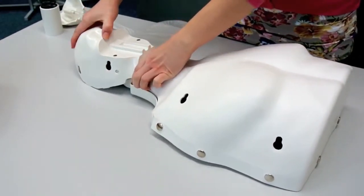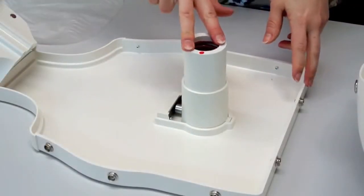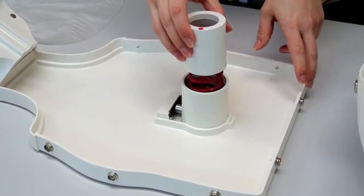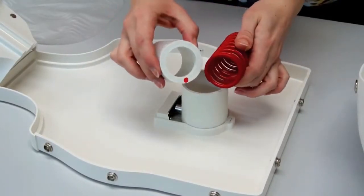Tilting the head back will make it easier to remove the thorax cover. The compression springs can easily be changed. Red for adult and green for child.